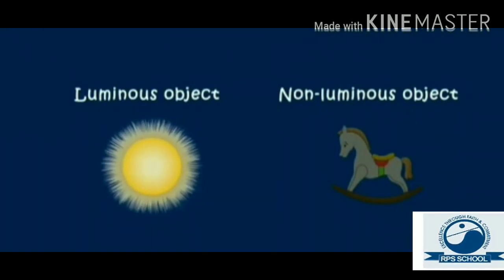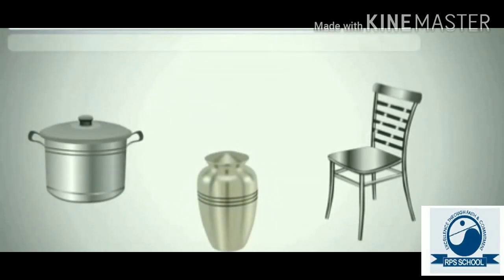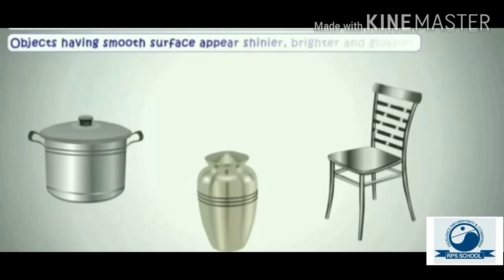So, kids, we have learnt how do we see different objects. What are luminous and non-luminous objects? And, yes, we have learnt that all non-luminous objects reflect the light falling on them. But, not all the objects reflect the light in a similar way. The smoother the surface, the more the light it will reflect.